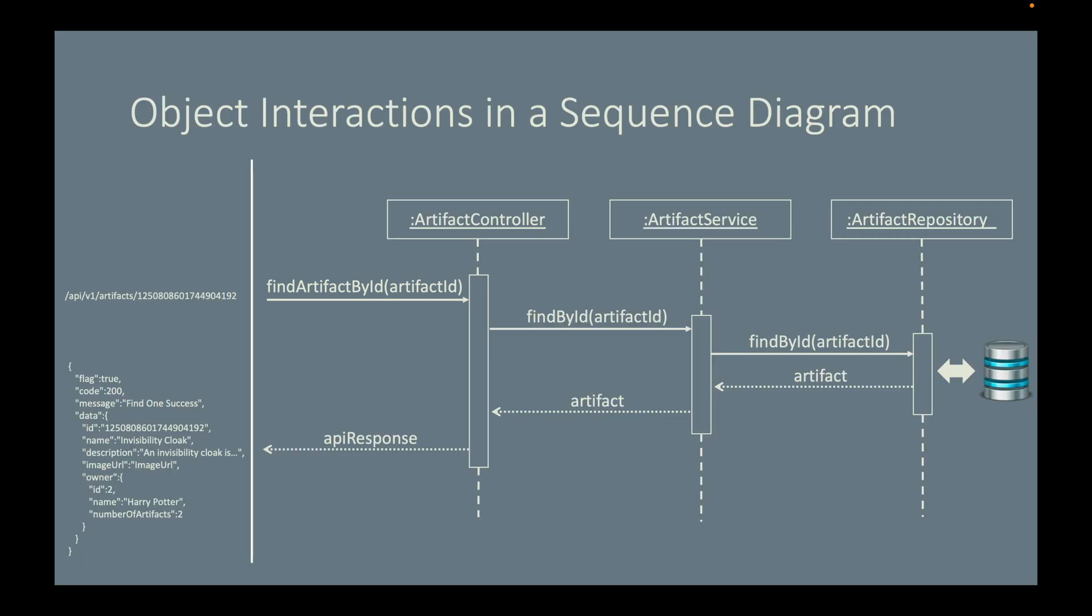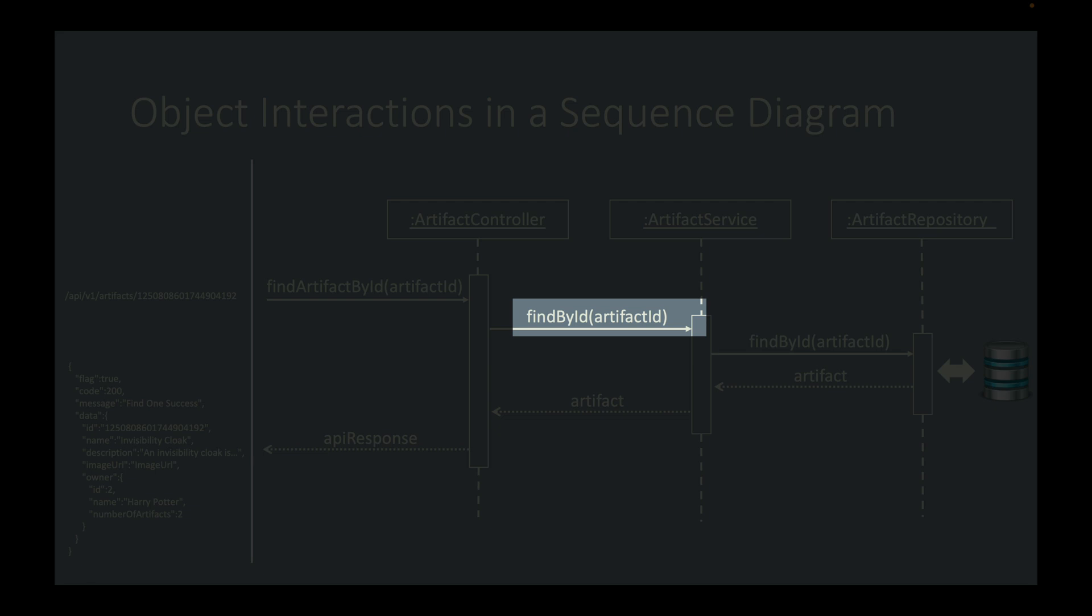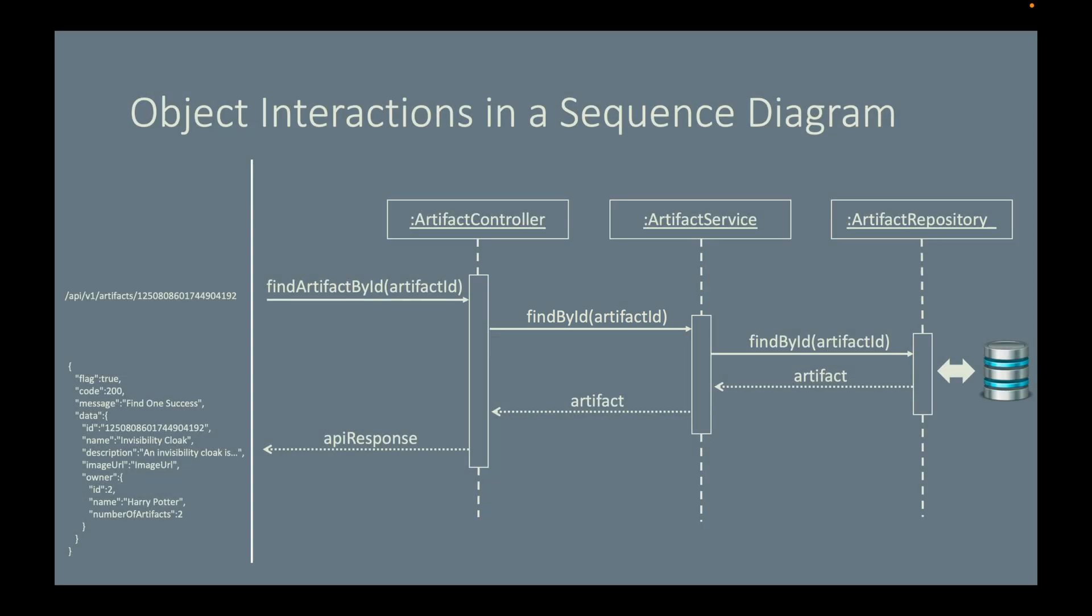Then, we're going to inject the ArtifactRepository into the ArtifactService class, and define one method called findById in the ArtifactService class, which takes an id as argument.